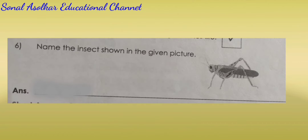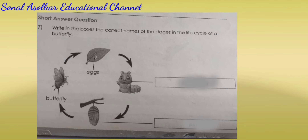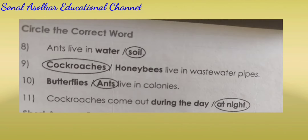Question number 6. Name the insects shown in the given picture. The answer is grasshopper. Question number 7. Write in the boxes the correct names of the stages in the life cycle of a butterfly. The answers are: caterpillar, pupa.